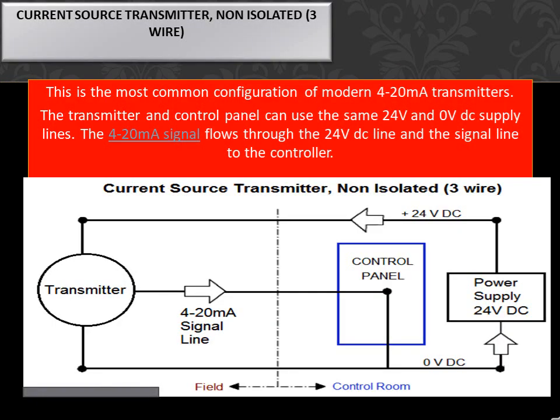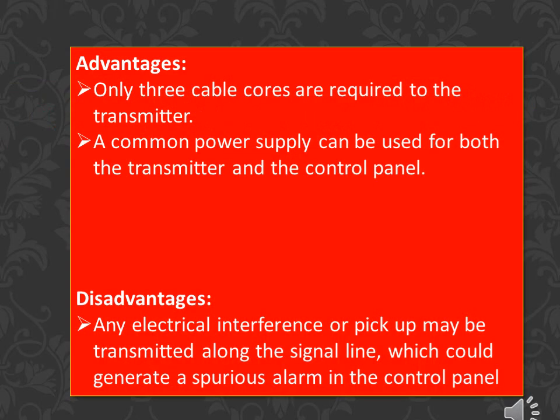Current source transmitter, non-isolated, 3-wire. This is the most common configuration of modern 4-20mA transmitters. The transmitter and control panel can use the same 24V and 0VDC supply lines. The 4-20mA signal flows through the 24VDC line and the signal line to the controller. Advantages: only 3 cable cores are required to the transmitter, and a common power supply can be used for both the transmitter and the control panel. Disadvantages: any electrical interference or pickup may be transmitted along the signal line, which could generate a spurious alarm in the control panel.